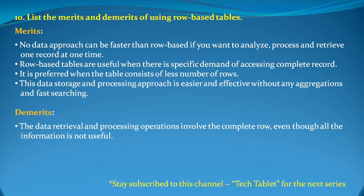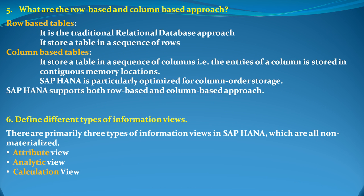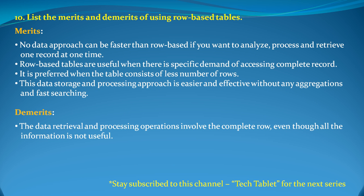The last question is: list the merits and demerits of using a row-based table. For merits — the data approach is faster than robust if you want to analyze, process, and retrieve one record at a time. Row-based tables are useful when there is a specific demand for accessing a complete record, such as name, school, and section all together. They are preferred when the table consists of a smaller number of rows.